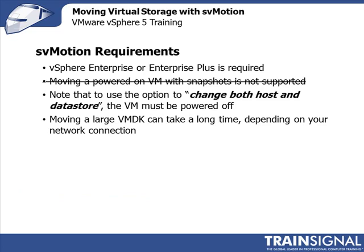Now let's talk about the Storage vMotion requirements. To use SVMotion, you must have either vSphere Enterprise or Enterprise Plus licensing. Previously in vSphere 4.1, the moving of a powered-on virtual machine with snapshots was not supported. But that's a new feature in vSphere 5 — you can now move powered-on virtual machines with snapshots, and I'll be demonstrating that shortly. You should note that to use the option 'Change Both Host and Datastore,' which you'll see when performing a virtual machine storage migration, that virtual machine must be powered off.